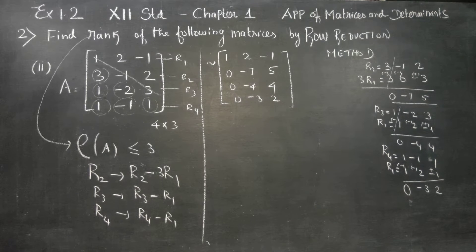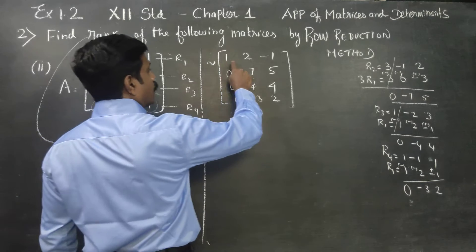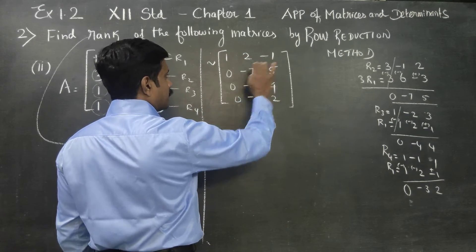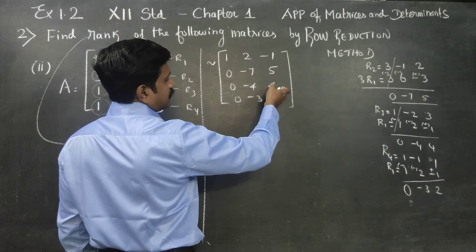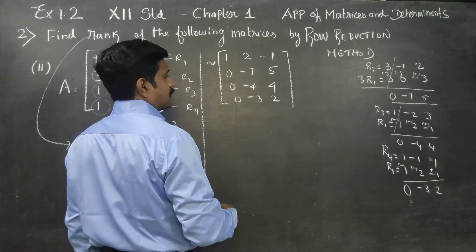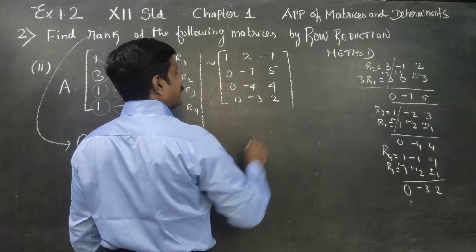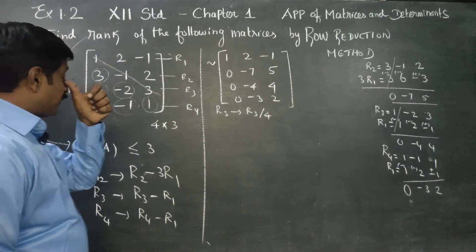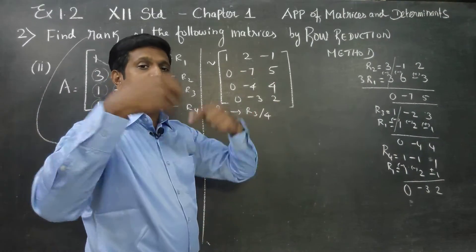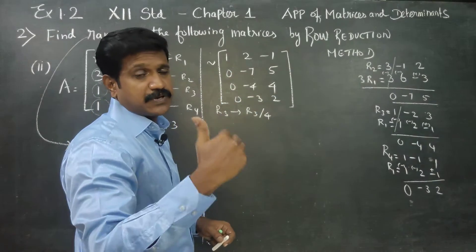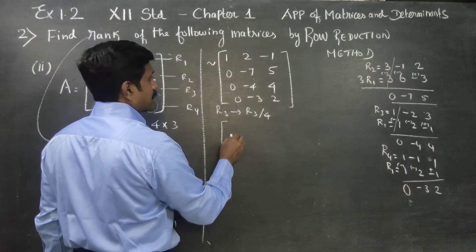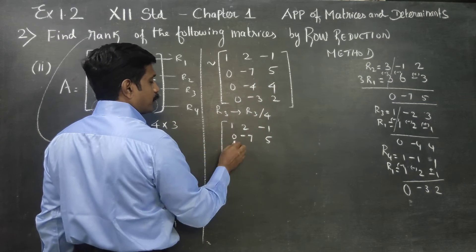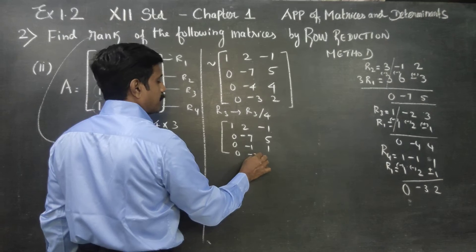Now proceeding: the matrix is 1, 2, minus 1; 0, minus 7, 5; 0, minus 4, 4; 0, minus 3, 2. If the numbers have a common factor, you can cancel and simplify fast. If you need to divide R3 by 4 — R3 equals R3 divided by 4 — elementary transformation: 0, minus 1, 1.